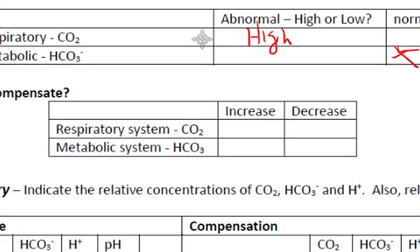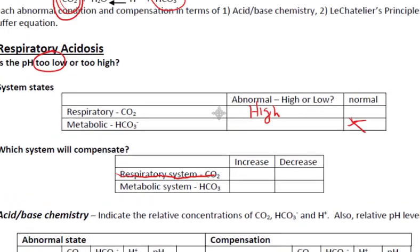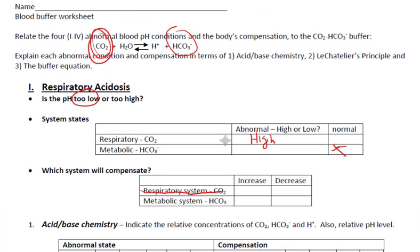Because the respiratory system is abnormal, you can eliminate any choices for the respiratory system. The metabolic system, which is in the normal state, will compensate. Because the metabolic system controls the base, we need an increase in base in order to offset the increase in acid.